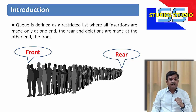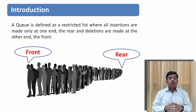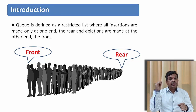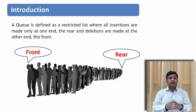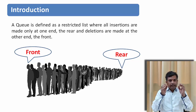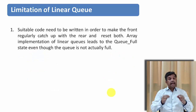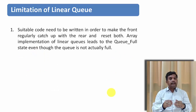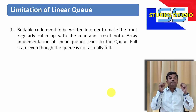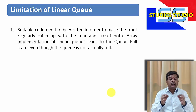Let us see the definition. A queue is a restricted list where all insertions are done at one end called the rear, and at the other end all deletions are done — that is called the front. This is the definition of a linear queue. But there are some limitations of this linear queue. Suitable code needs to be written in order to make the front regularly catch up with the rear and reset the pointers.